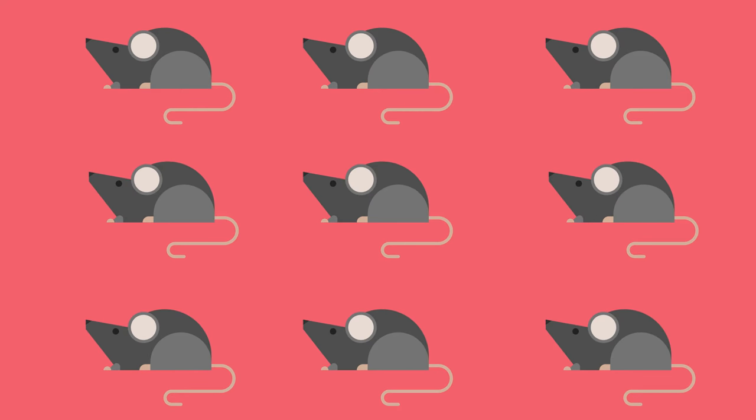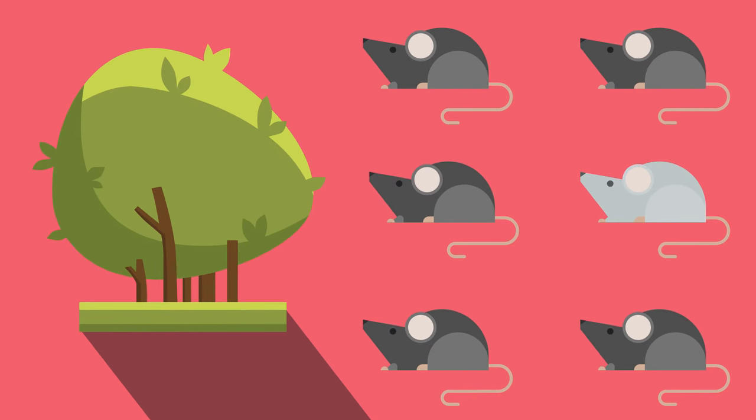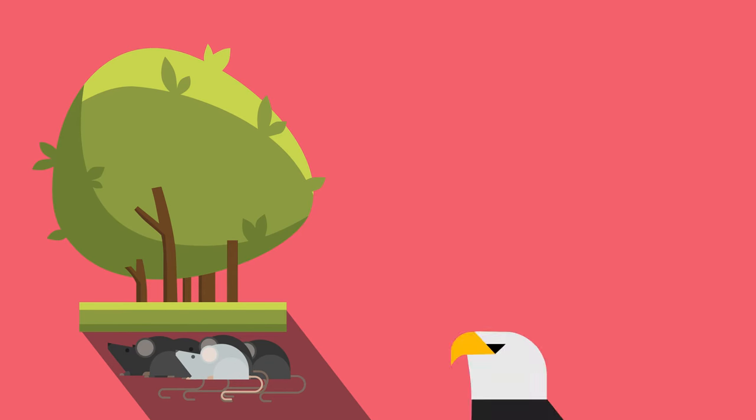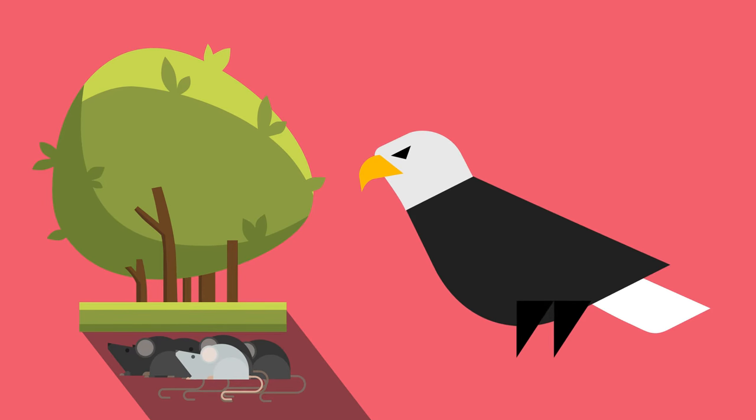For example, in a population of black mice, a mutation might arise which causes white fur. This mutation would not be an advantage to mice living in the wild, because the white mouse would easily be spotted by predators and eaten. It is not likely to survive to adulthood and breed to pass on this white hair gene to its offspring.